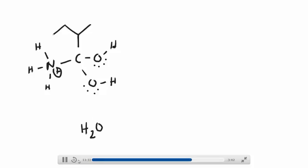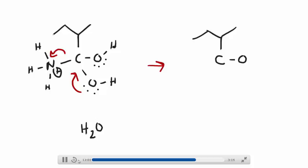What we've done by doing this is created a very good leaving group. At this point you can take either one of the two OH groups attached to the carbonyl carbon and make a pi bond. As that occurs, carbon can't have five bonds, so you break the bond between carbon and nitrogen to kick out ammonia, and you get this species.